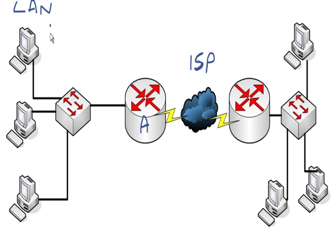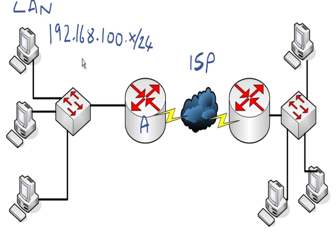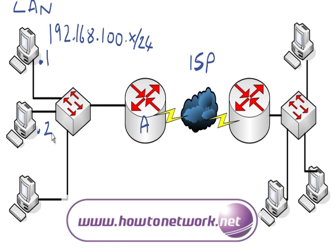We've got our hosts sitting on our local area network. We can give them any address, but say we've got them in the 192.168.100.x range using a standard /24 mask. Our first host is .1, we have another host, and these could be web servers or any device really on the inside of our network, and .3. So these will all communicate on the 192 network between each other.